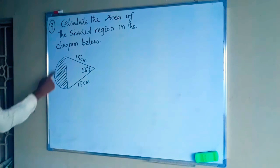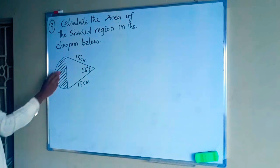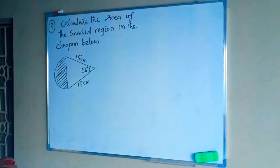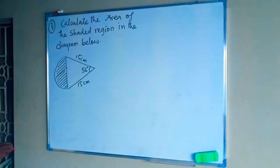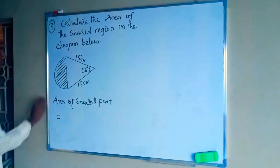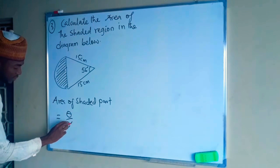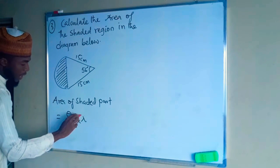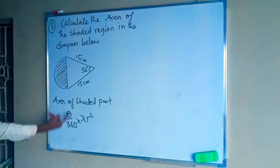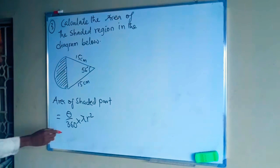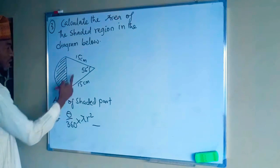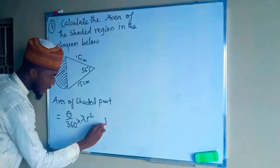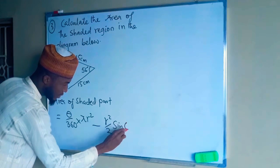Question four asks for the area of the shaded region, which is a sector. The method is: find the area of the entire sector, then subtract the area of the triangle inside it. The formula for a sector is (θ/360) × πr², and the formula for the triangle is (r²/2) × sin θ.